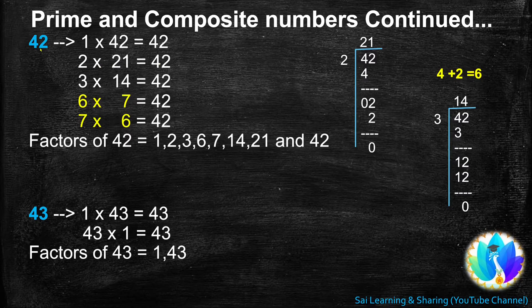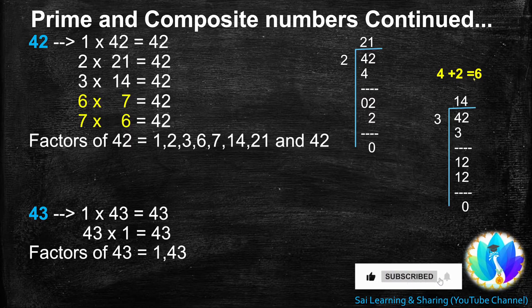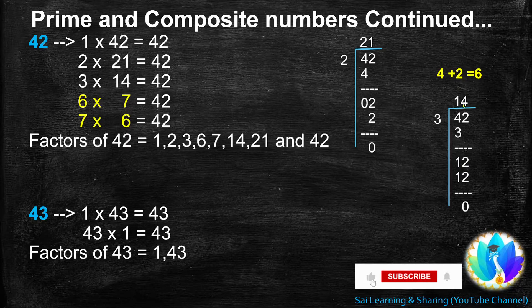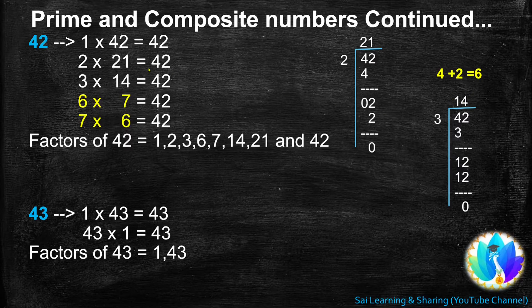42 is a multiple of 3. We learn the divisible rule of 3: when we add the digits of 42, we get 6. 6 is a multiple of 3, so 42 is a multiple of 3. When we divide 42 by 3, we get quotient 14. 14 is another factor of 42. So, 3s are 14, 42.